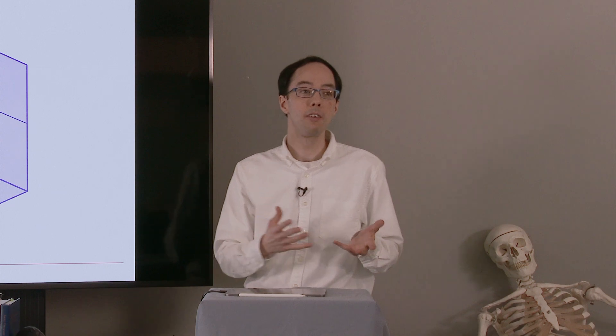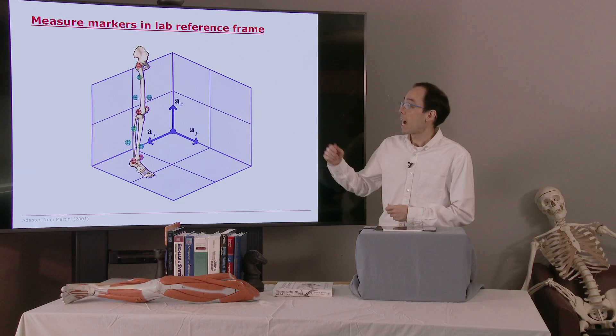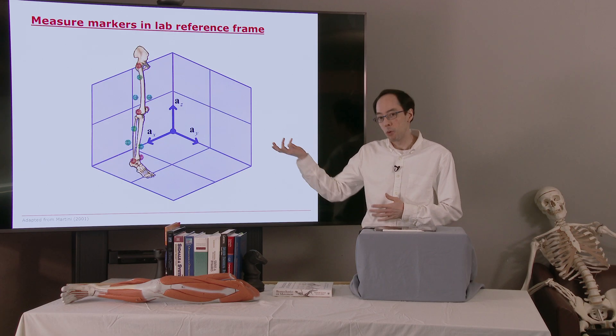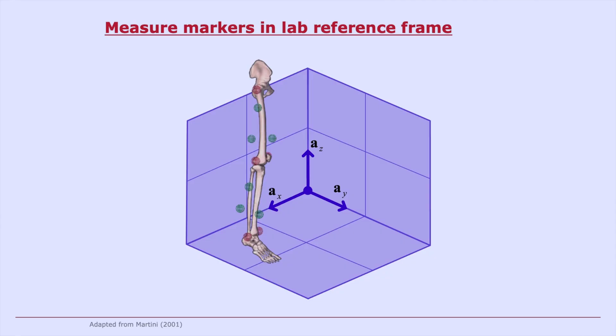One little problem here though is we actually want to know where the anatomical reference frames are. The anatomical reference frames are what we use to define, for example, the knee joint angle. However, what we can do is collect one frame of motion capture data and use that frame to define the relationship between the tracking reference frames and the anatomical frames.